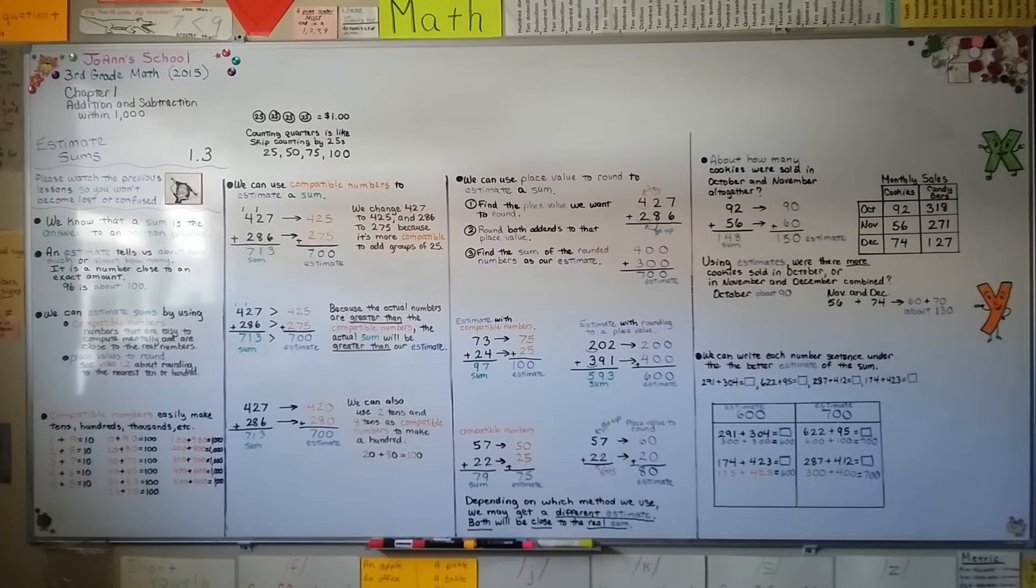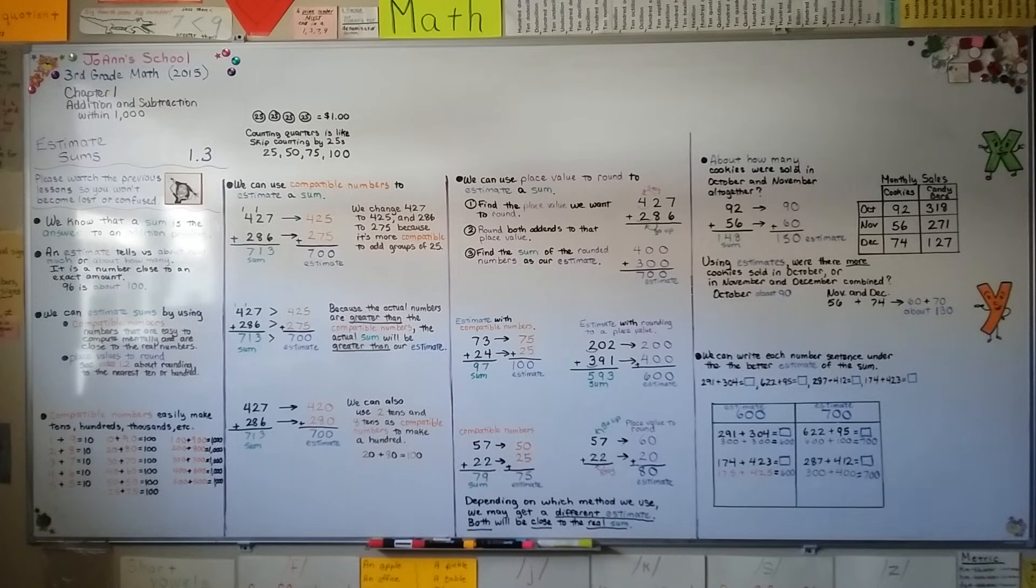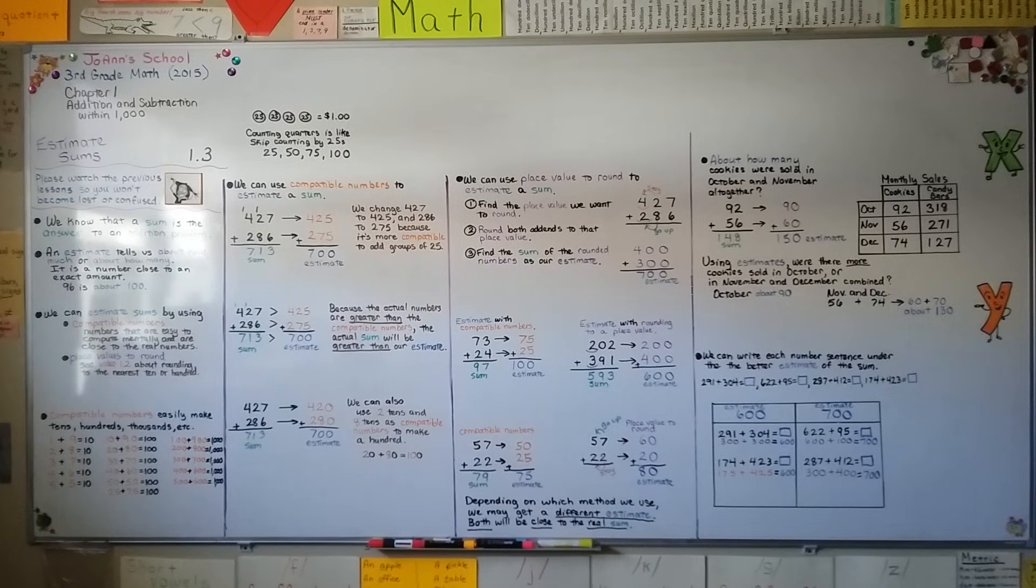So we can estimate sums by using compatible numbers or rounding place values to the nearest tens or hundreds to make an estimate. And remember, depending on which method we use, we may get a different estimate. But either way, we're going to be close to the real sum. I hope you have a great day and I'll see you for the next lesson. Bye.